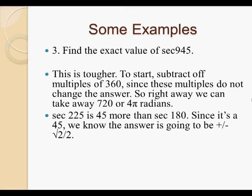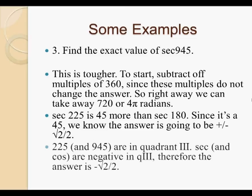Secant 225 is 45 more than 180. Since it's a 45, and by a 45 I mean a special angle 45, we know the answer is going to be root 2 over 2 would be positive or negative. We don't know which at this point. 225 and 945 as well are in quadrant 3. Secant and cosine are negative in quadrant 3. Therefore the answer is negative root 2 over 2, or negative 1 over root 2, which is the same answer.